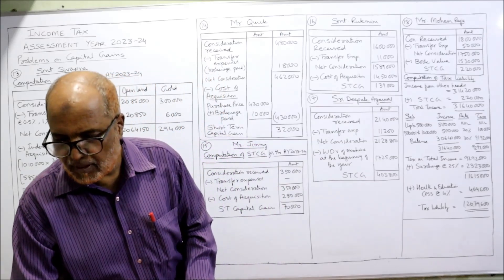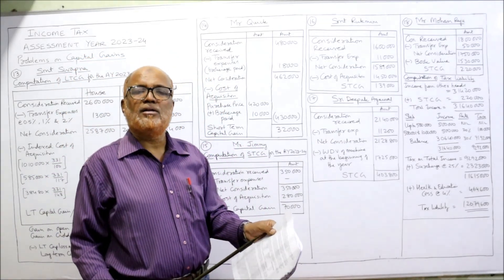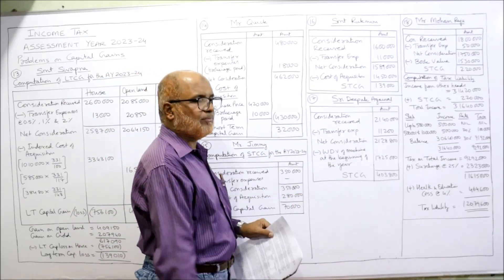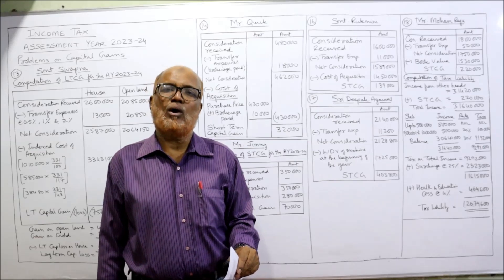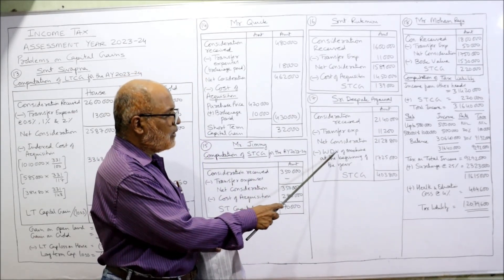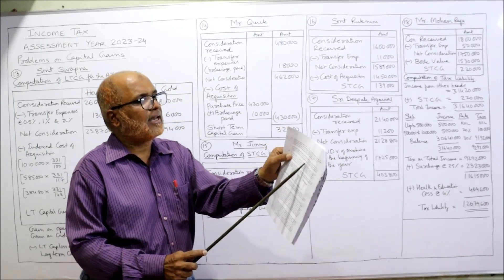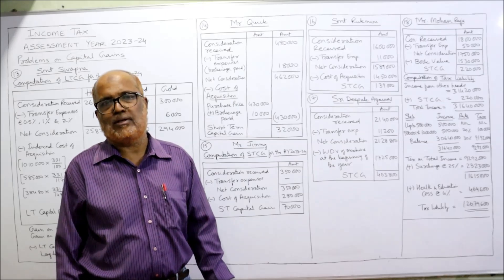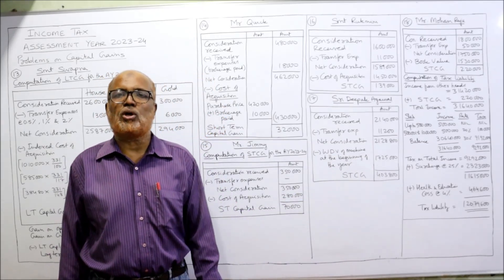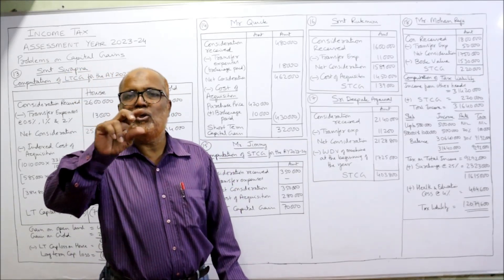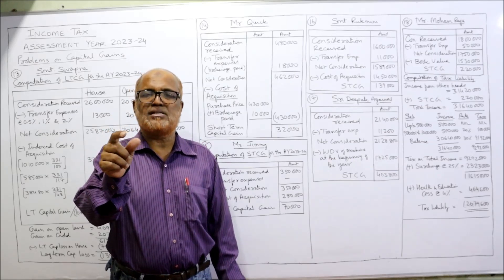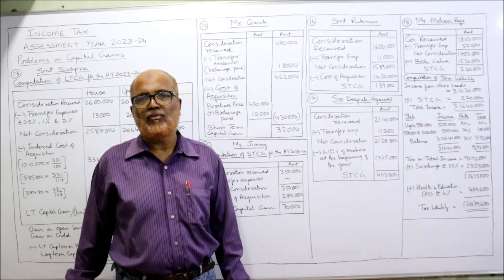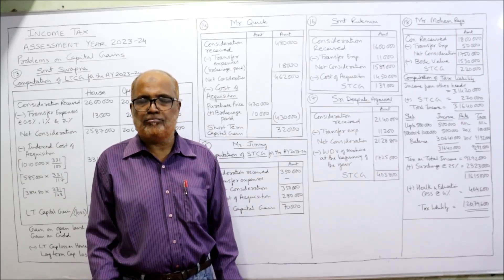In this problem, the machinery is a depreciable asset used in business. Computation of short-term capital gain: consideration received ₹21,40,000 minus selling expenses ₹11,200 = net consideration. From this, deduct the written down value (WDV/book value) of ₹17,25,000 — not cost of acquisition, but book value. Short-term capital gain: ₹4,03,800. In the examination, write a note: machinery is a depreciable asset used in the business, so gain arising on sale is short-term capital gain irrespective of the period of holding, and no indexation is allowed.